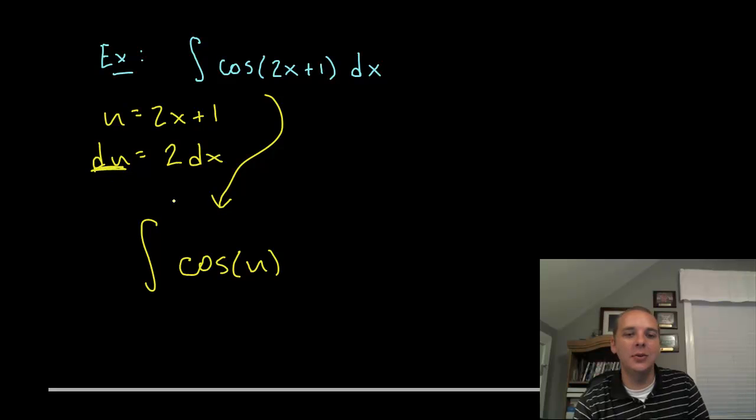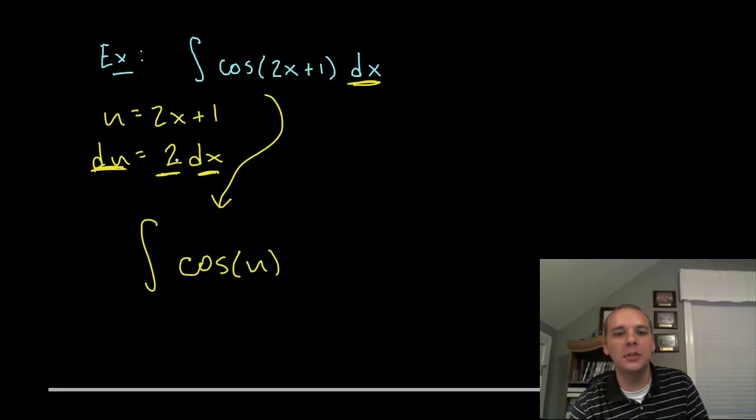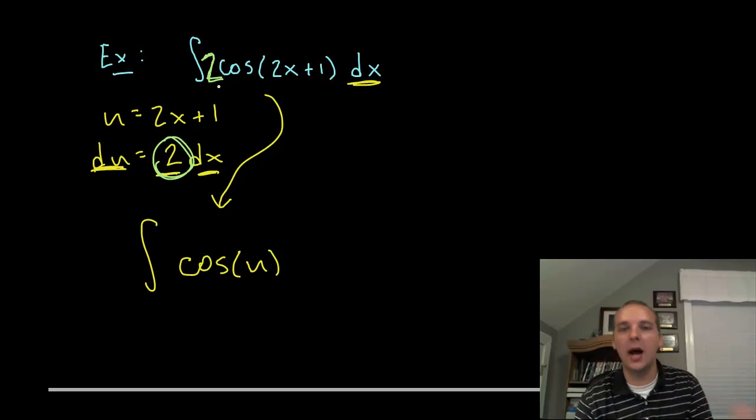This is an extremely common situation where you need to adjust things by a constant. If you need a 2dx and you only have a dx, what you can do is you can give yourself a 2. If you want a 2, take a 2. Now obviously that in and of itself changes the expression and would not be correct. So what we can also do is, if you need a 2, give yourself 1, but on the outside of the integral put a 1 half. Now the reason this works is constants are allowed to float inside and outside of the integral symbol. So if you pulled the 2 out, 2 times a half is 1, and it's like it was never there. So this 1 half keeps things balanced.